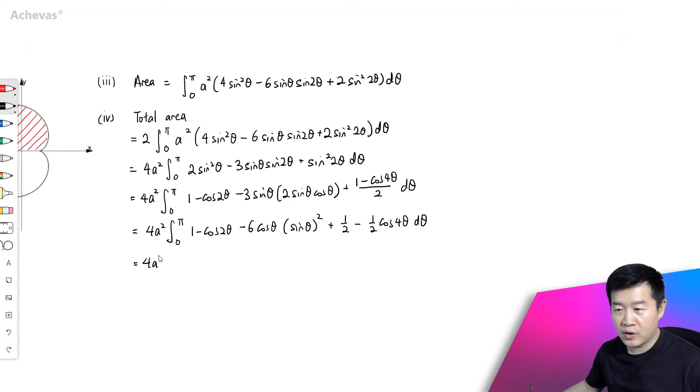So this will be 4a². Integrating 1 gives me θ, integrating this gives me a half sine 2θ, and minus 6 of this, which we are going to apply fx f'x.